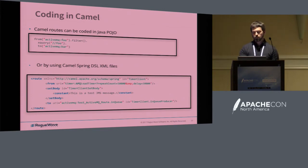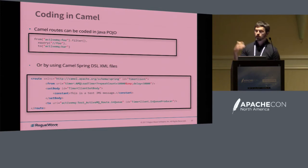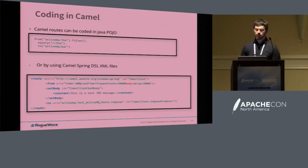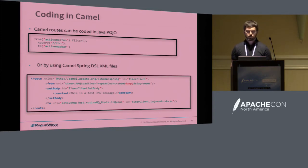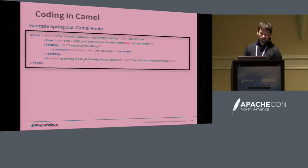All this Java POJO approach is implementing the route builder class. One drawback to Java POJOs is you can't render these routes graphically in HawtIO, which is extremely useful when you're debugging routes and transformations. With the Spring DSL, as you're mocking things up, you can actually see the messages propagate through your chain of transformations and debug them that way. Once you get into production or want to do more custom things, you can always do the POJOs as well.